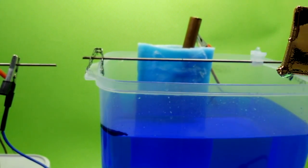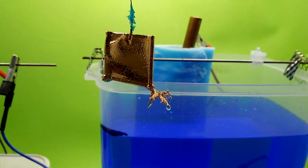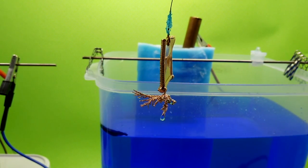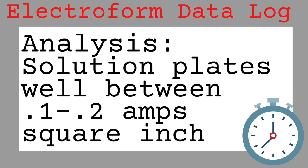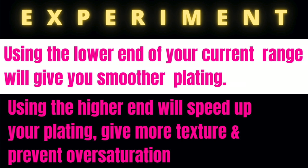Looking at the test results, we can conclude that this bath plates best between 0.1 and 0.2 amps per square inch. At the lower end of the range, 0.1, we achieved smooth plating with some texture, and at 0.2 amps per square inch, our results were a nice bright plating with some texture and character. An added benefit to plating at higher current is that the plating will deposit much faster.